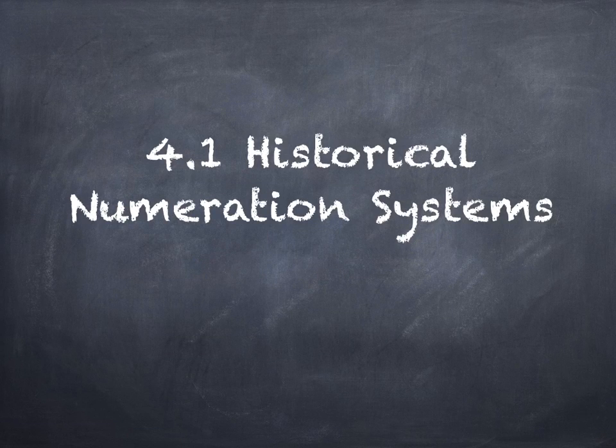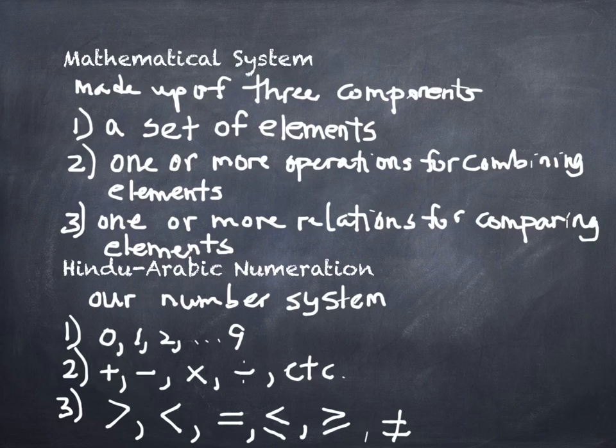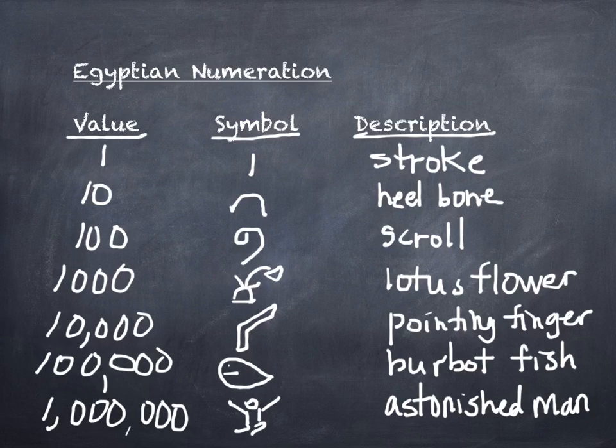All right, so we talked about the beginning of historical numeration systems. We talked about mathematical systems being made up of elements and operations for combining them and ways of comparing them. We talked about our number system, which is the Hindu-Arabic number system, and then we looked at two different number systems. The one we talked about mostly was Egyptian.